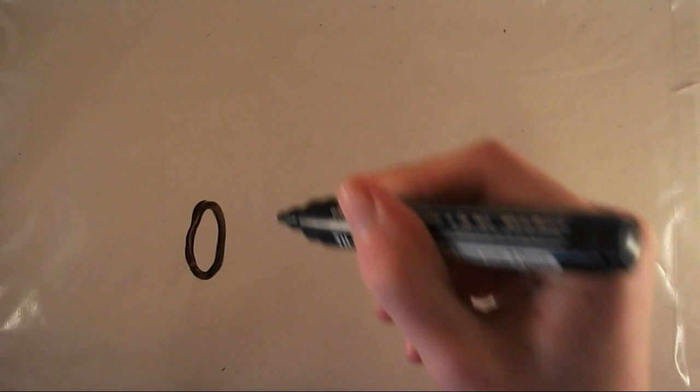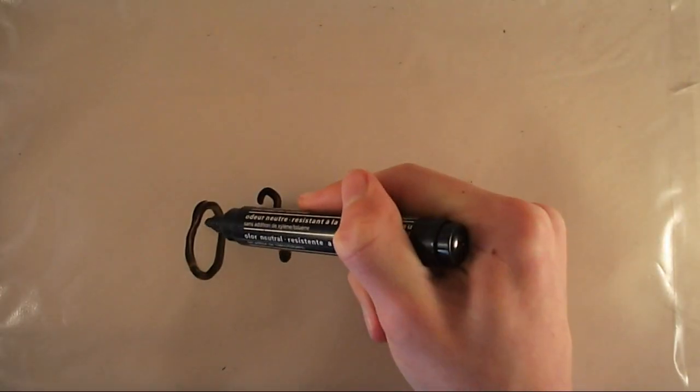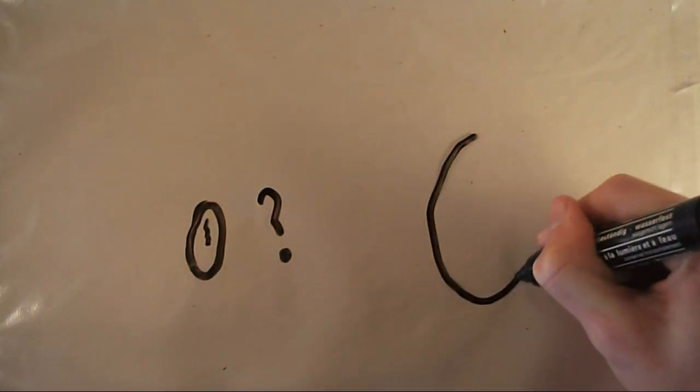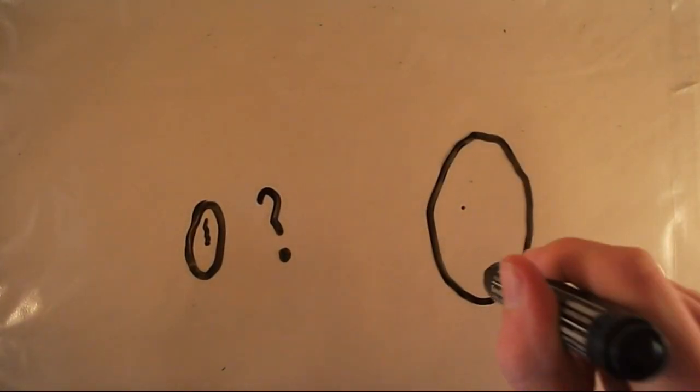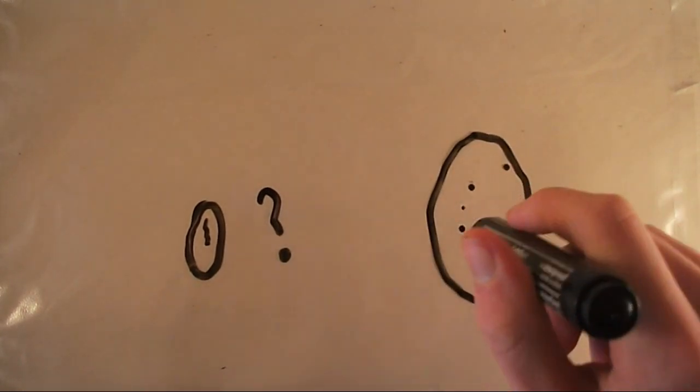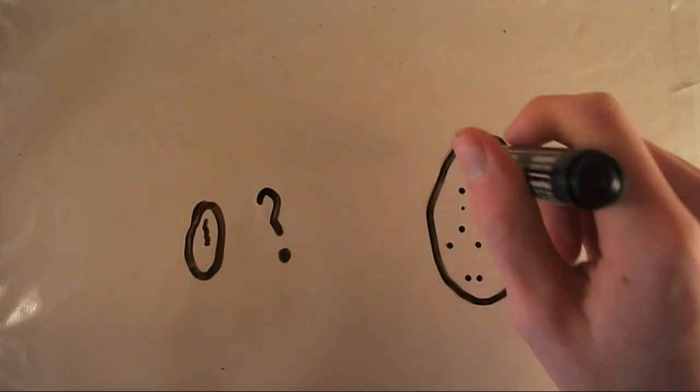This leads on to the next point. Why do some not pop? If a popcorn kernel has a crack in the shell, it's not going to pop because the pressure isn't going to build up as much. This also happens with potatoes. We have to poke holes in potatoes to allow some of the steam to escape, which prevents the buildup of pressure which would cause the explosion.